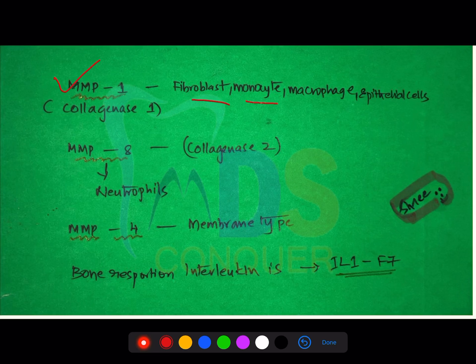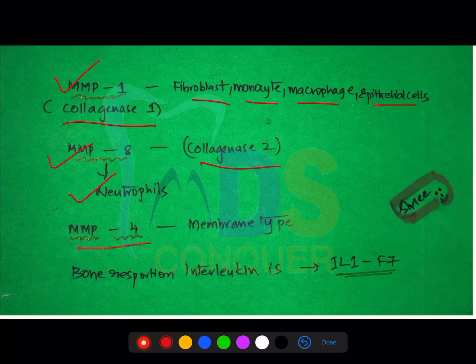Please make a note of the difference between subgingival and supragingival calculus. Regarding matrix metalloproteinases — MMP-1 is associated with fibroblasts, myocytes, macrophages, and epithelial cells, also called collagenase-1. MMP-8 is mostly associated with neutrophils and is called collagenase-2. MMP-14 is membrane-type. The bone resorption interleukin is IL-1.